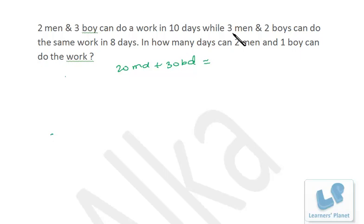And the same work can be done by three men in eight days, that is 24 man-days, plus two boys, it is 16 boy-days. So this is 4 and this is 14. That means 7 and 2. That means seven boys is equal to two men.